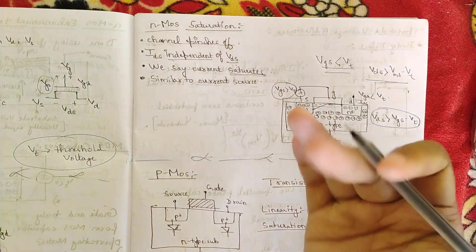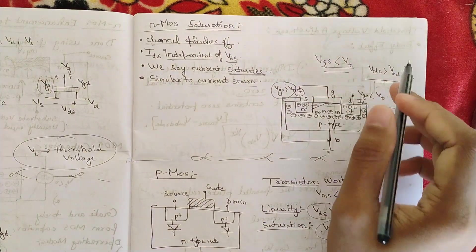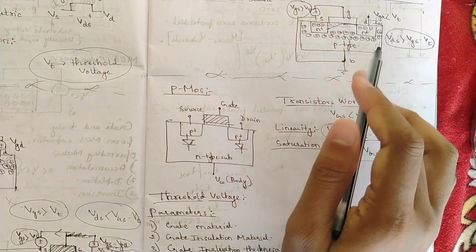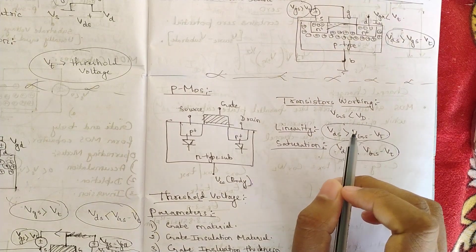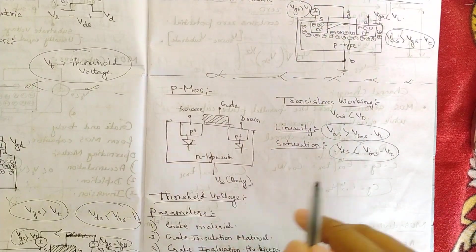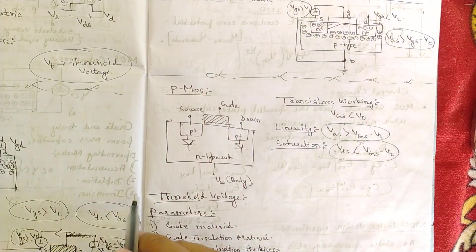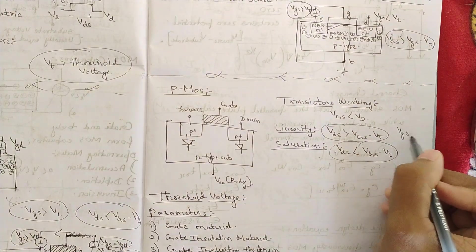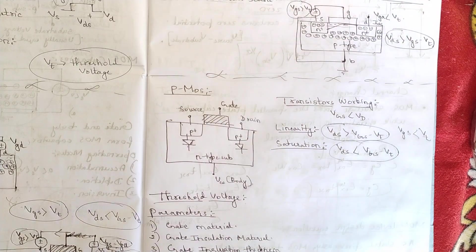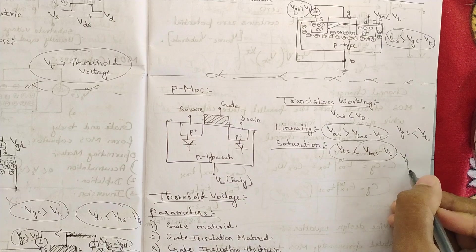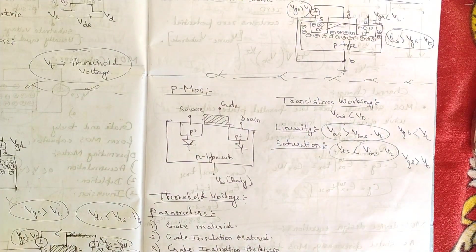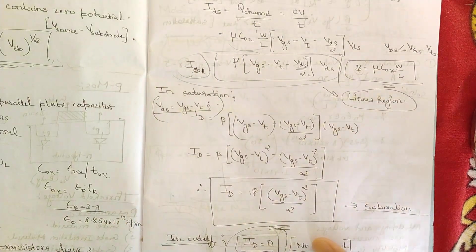This concludes the three regions of operation for the NMOS transistor. For PMOS, the relations are simply the reverse of NMOS. In cutoff it remains the same — no channel, VGS equals zero. In the linear region, VGS is less than VT (instead of greater), and VDS is greater than VGS minus VT. The same reversal applies for the saturation region.